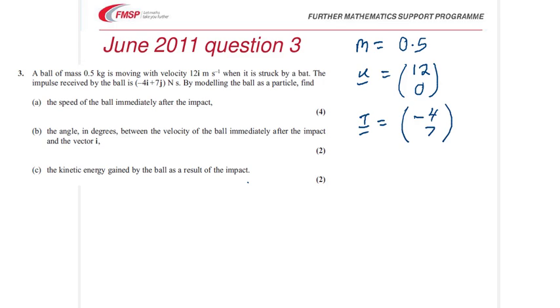So we're going to use this equation: impulse equals change in momentum in vector form. Putting the numbers in, we've got -4, 7. Wait, don't want to have the wrong sign there.